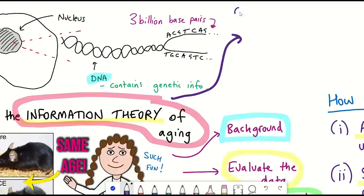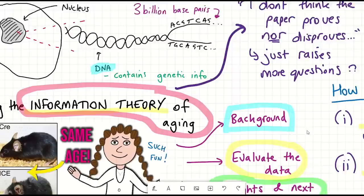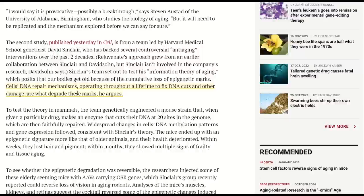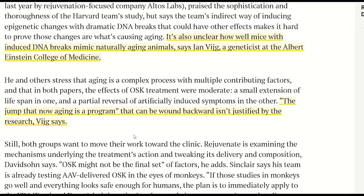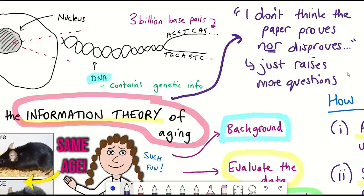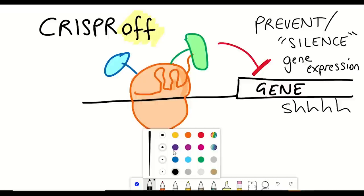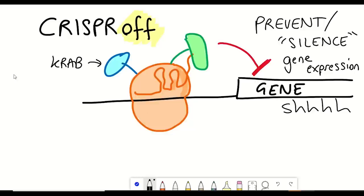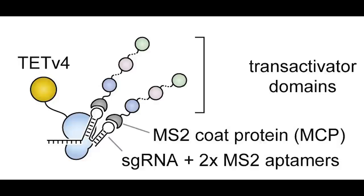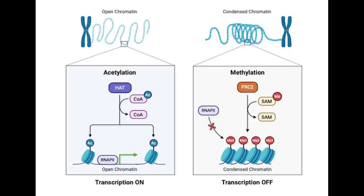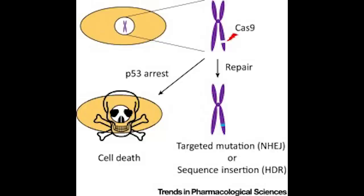This paper caused quite a stir on Twitter. I think this quote by Jean V says it best: 'The jump that ageing is a program that can be wound backwards isn't justified by their research.' The key question is: if this method doesn't properly test the theory, how would we test it? The only thing I could think of was to use CRISPR activation and inactivation methods for precise epigenetic editing, because here you can modify epigenetic marks in precise locations of the genome. This wouldn't be trivial to set up, and it's not entirely clear where you would target it, but at least you'd have a better understanding of what the cell's initial response would be — and there wouldn't be any double-strand breaks.